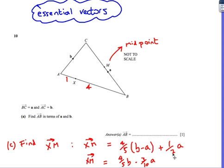Then I just need to simplify that, I've got 4 fifths b, and then I've got 4 fifths times minus a plus a half a, I'm going to use my calculator, minus 4 fifths plus a half gives me minus 3 tenths a.